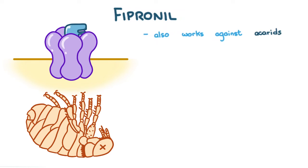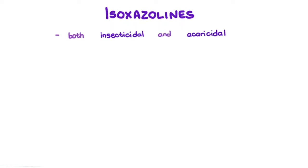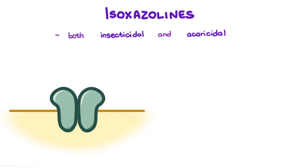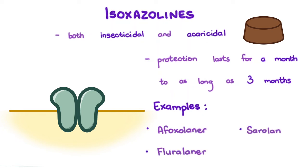In a topical formulation, fipronil is very lipophilic, in that it accumulates in sebaceous glands, allowing it to last as long as a month. Isoxazolines are a new class of compounds that are also both insecticidal and acaricidal. They block arthropod ligand-gated chloride channels and kill the bug within 48 hours. They are formulated as chewables, and protection lasts for a month to as long as three months for some of them. Examples include afoxolaner, fluralaner, and sarolaner.